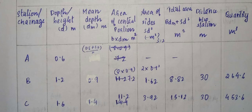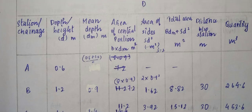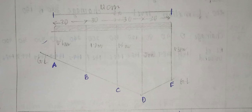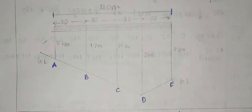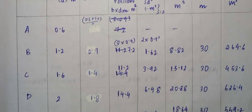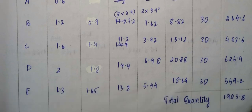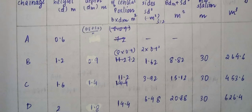In the table, the stations are labeled A, B, C, D, and E. The corresponding height values are: station A = 0.6 m, station B = 1.2 m, station C = 1.6 m, station D = 2.0 m, and station E = 1.3 m. These are entered in the height column.